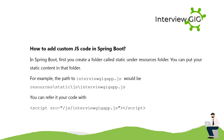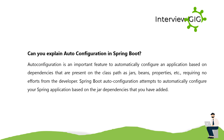You can refer to it in your code with: &lt;script src="/js/interviewgig-app.js"&gt;&lt;/script&gt;. Can you explain auto configuration in Spring Boot? Auto configuration is an important feature that automatically configures an application based on dependencies present on the class path — such as jars, beans, and properties — requiring no effort from the developer.